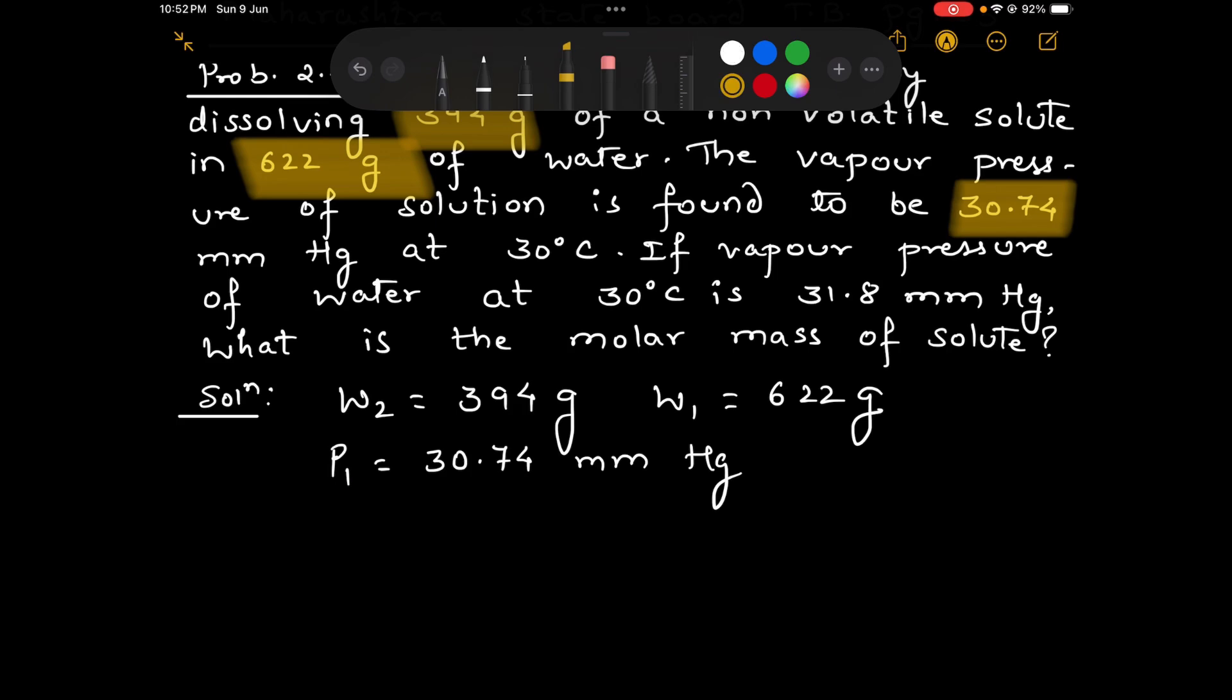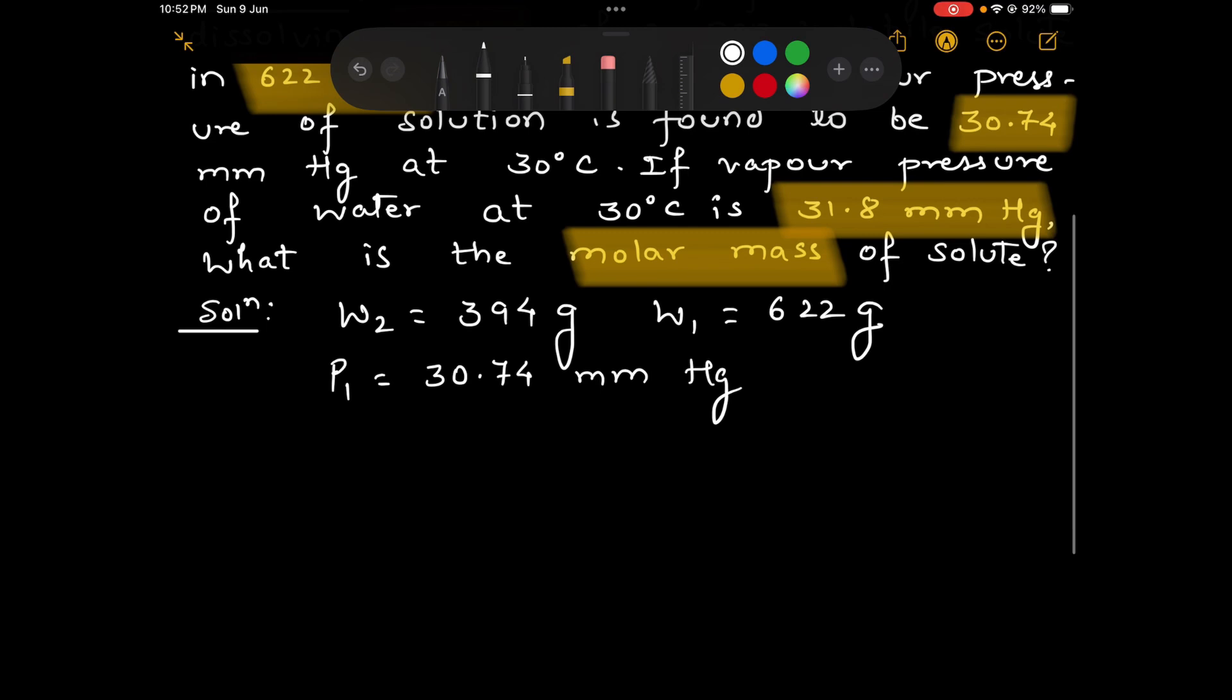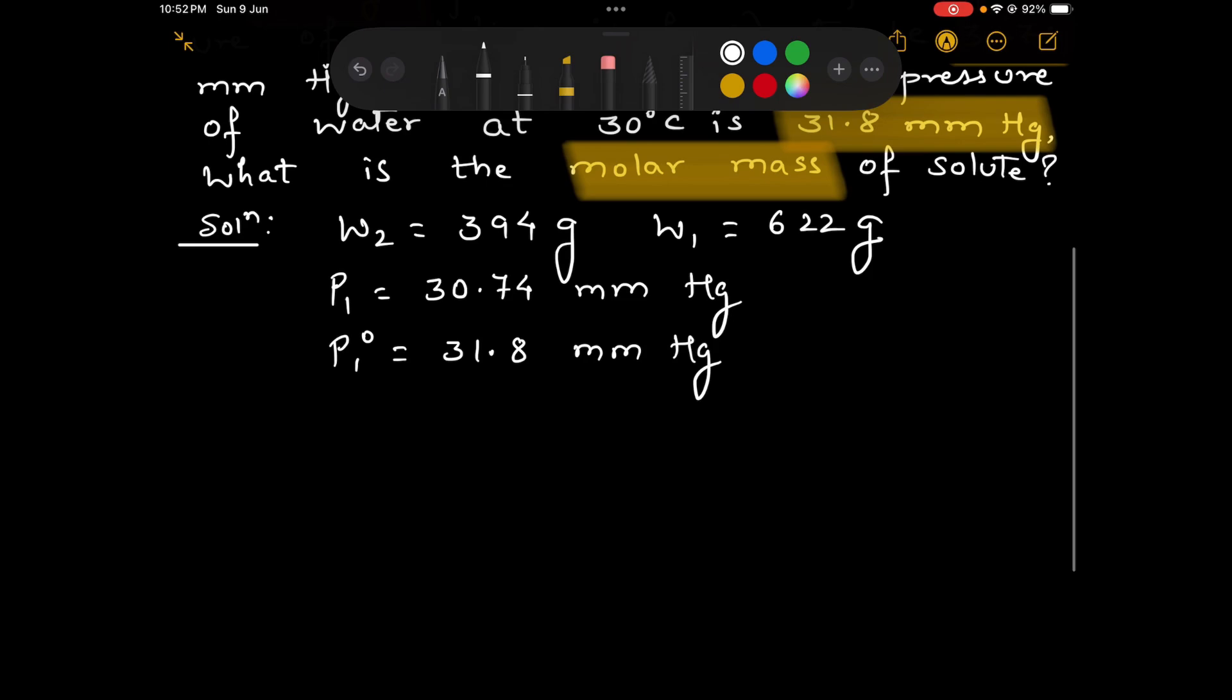If the vapor pressure of water at 30 degrees Celsius is 31.8 mmHg, what is the molar mass of the solute? Vapor pressure of water means vapor pressure of the pure solvent which is given by P1° equals 31.8 mmHg. And what we have to find out is molar mass of the solute.